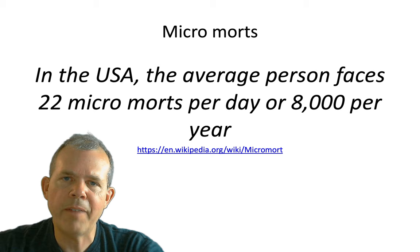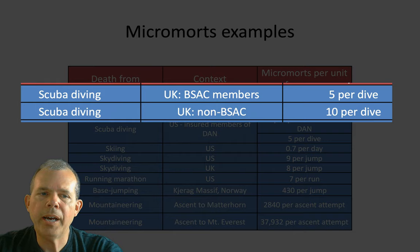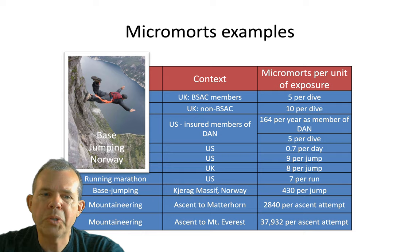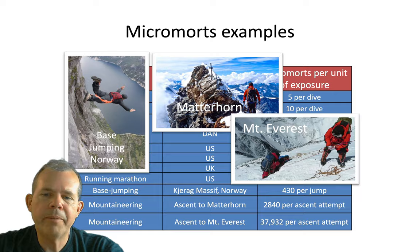Here are some examples. Death from scuba diving carries about 5 micromorts per dive, and non-trained people have double that — 10 micromorts per dive. Base jumping in Norway is 430 micromorts per jump. Climbing the Matterhorn is apparently 2,800. And if you're going up Mount Everest, you're at 37,000 micromorts. These are pretty risky events when you consider how many numbers are associated with them.